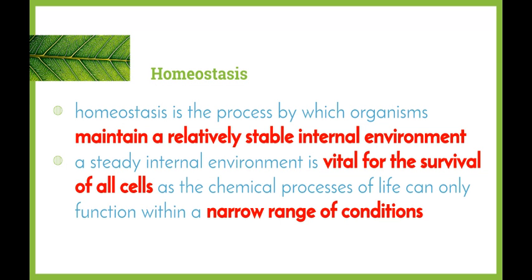Homeostasis is the process by which organisms maintain a relatively stable internal environment. It depends on where the organism lives and what they need to do in order to maintain this internal environment. A steady internal environment is vital for the survival of all cells, as the chemical processes of life can only function within a narrow range of conditions. The cause is a change outside the narrow range of conditions; the effect is that the organism is unable to maintain its relative state, and therefore survival of the cells is impaired.